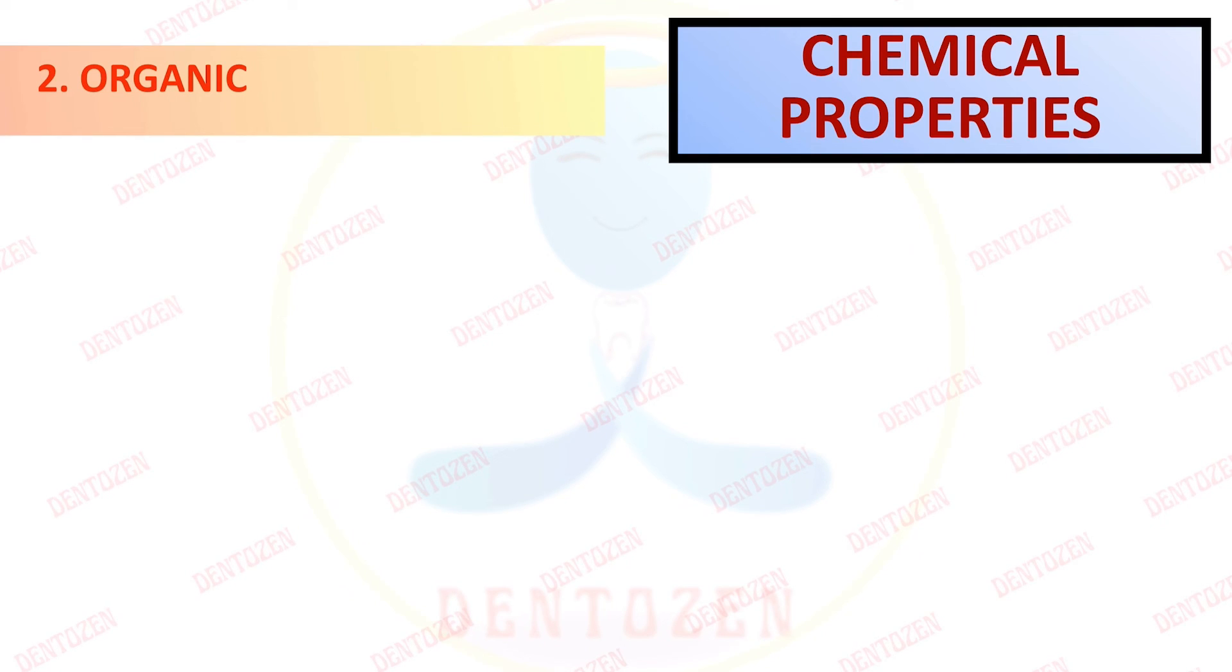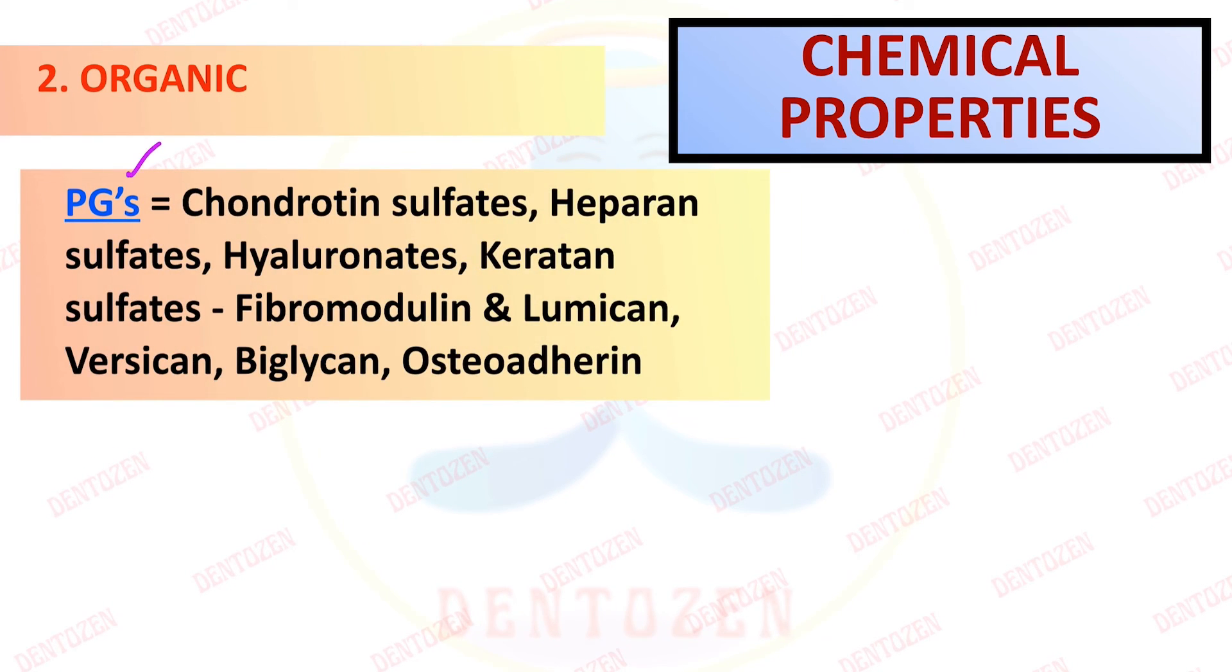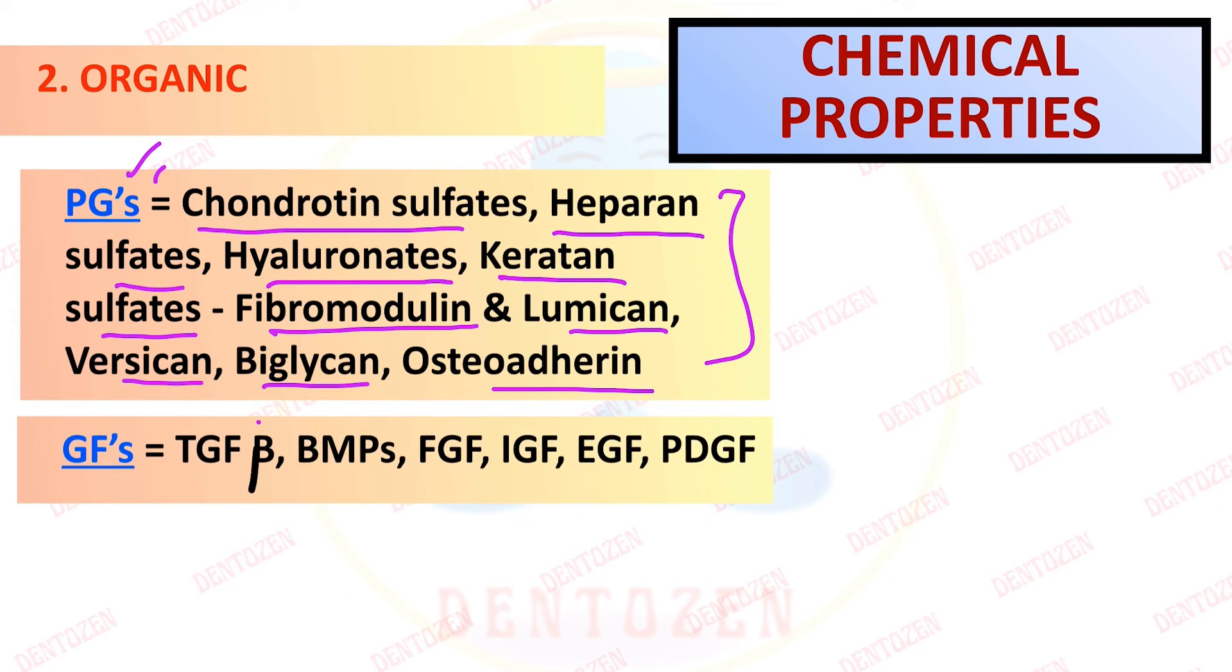Now the proteoglycans which are seen in cementum, which are also seen in bone, are chondroitin sulfates, heparin sulfates, hyaluronates, keratin sulfates like fibromodulin, lumican, versican, biglycan, and osteoadherin. And several growth factors like transforming growth factor beta, bone morphogenic proteins, fibroblast, insulin and endothelial derived growth factor, platelet derived growth factor. So all these growth factors are also seen in cementum.